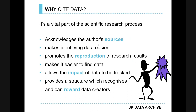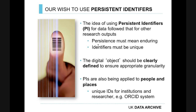You probably know why we should cite data. It's about acknowledging the author's creativity, sources, and identity. It helps you find data, promotes reproduction of research so you can get back to original research, and allows the impact of data to be tracked. If you put a DOI into Google, you can immediately get some idea of what's happening to the data. It also provides a good structure and more incentive for data creators to deposit data, now that there's more of a reward structure.